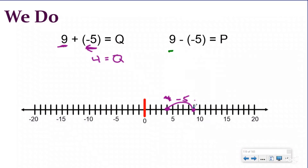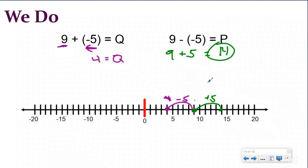For this one we're starting at nine again, but we are subtracting a negative. So instead of subtracting, we add the opposite: the opposite of negative five is positive five. We change it to an addition sign and move five units to the right, ending up at fourteen. Nine plus five is fourteen. Again, you can see the difference between adding a negative and adding a positive.